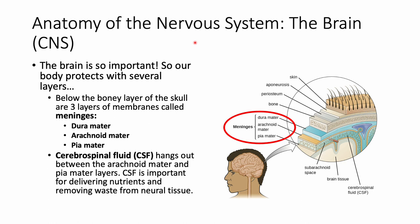Let's dive deeper into the central nervous system, specifically the brain. Our brain is very important, so our body protects it well with lots of different layers. Below the bony layer of your skull, you have three layers of membranes called meninges: the dura mater, arachnoid mater, and pia mater.